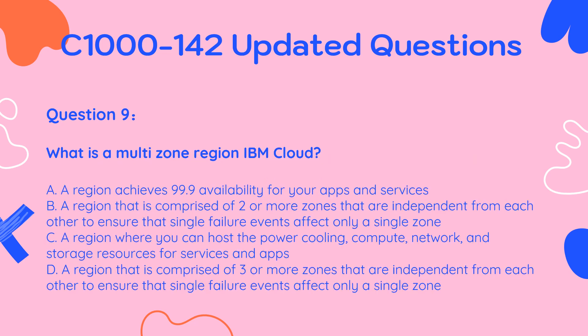Question 9. What is a multi-zone region in IBM Cloud? A. A region that achieves 99.9% availability for your apps and services. B. A region that is comprised of two or more zones that are independent from each other to ensure that single failure events affect only a single zone. C. A region that is comprised of three or more zones that are independent from each other to ensure that single failure events affect only a single zone.